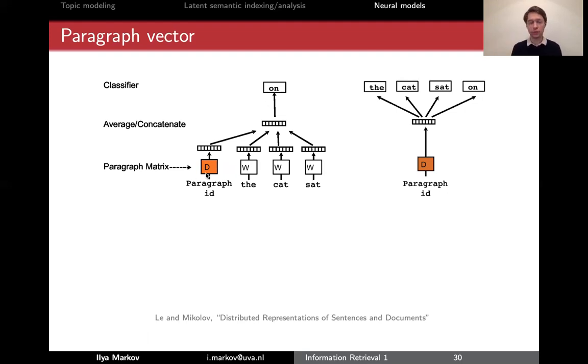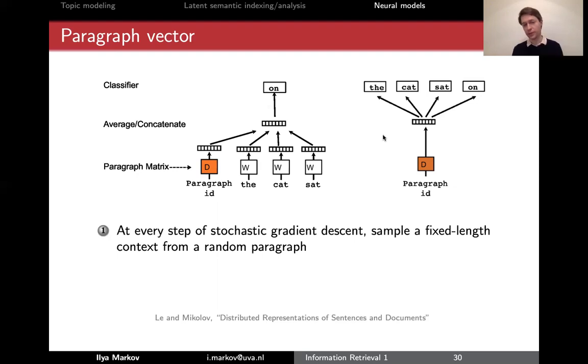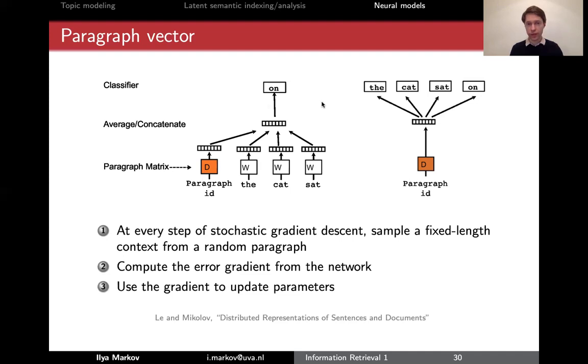Now, how do you learn these vectors, the separate vectors for documents? So basically, the process is roughly like this. You do it iteratively, you use gradient descent, and at every step of gradient descent, you sample a fixed-length context from a random paragraph. So basically, you choose a document or paragraph. Let's say paragraph and document here are the same. I mean the same by them. So you pick a fixed-length sequence of words, called context here, from a random document. And then you basically recalculate the parameters from this network or this network. And then you do this many, many times.